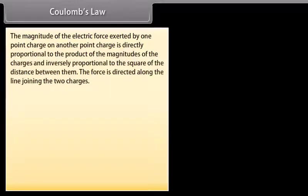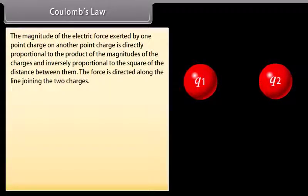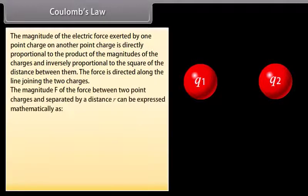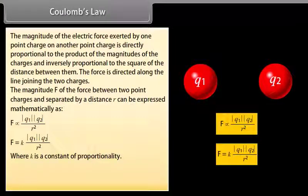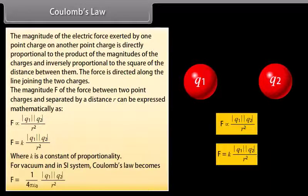Coulomb's law: The magnitude of the electric force exerted by one point charge on another is directly proportional to the product of the magnitudes of the charges and inversely proportional to the square of the distance between them, directed along the line joining them. Mathematically, F = k|q₁||q₂|/r². In SI units for vacuum, F = (1/4πε₀) × |q₁||q₂|/r².